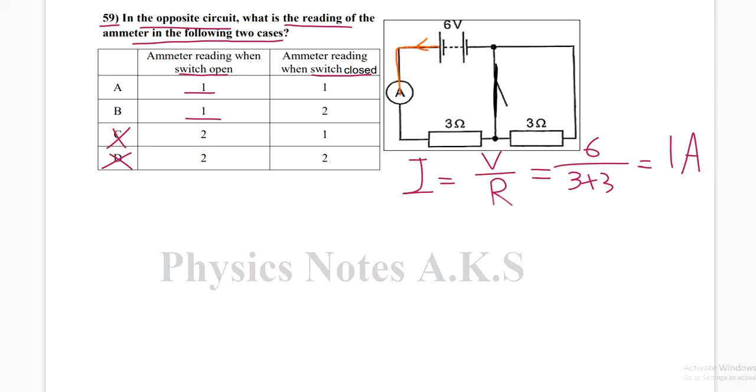The same idea here: the current will go out of the positive terminal of the battery, through the ammeter, into the first resistor. The same current completes in here and will go back to the battery again.